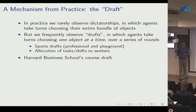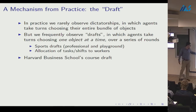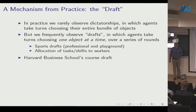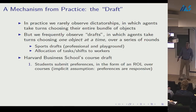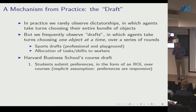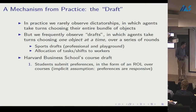A draft mechanism is used at Harvard Business School to allocate elective courses to MBA students. Students submit preferences as a rank-ordered list over courses. There's an implicit assumption in this mechanism that preferences can be expressed via a rank-ordered list — more specifically, that preferences are responsive.